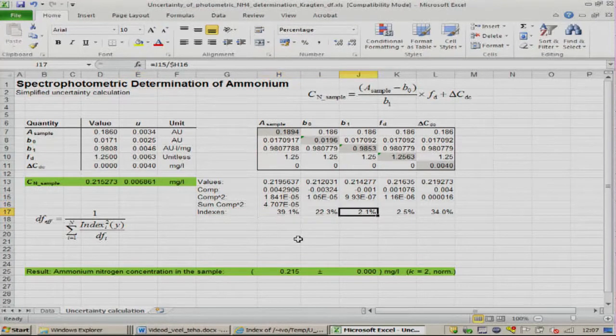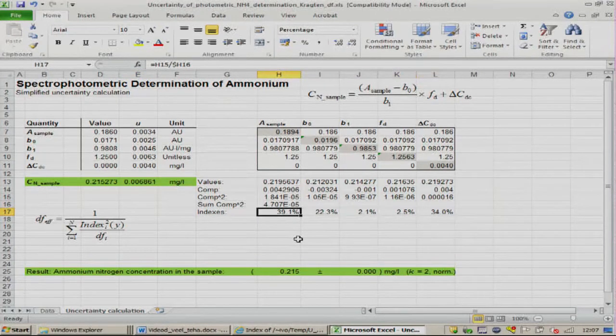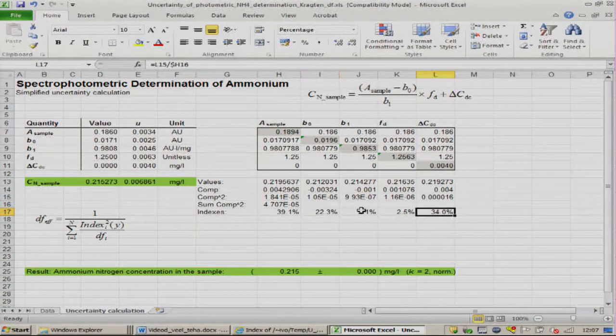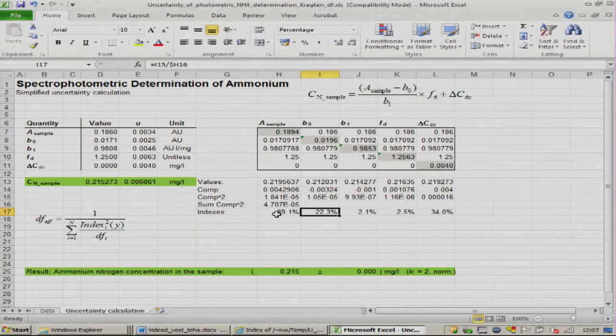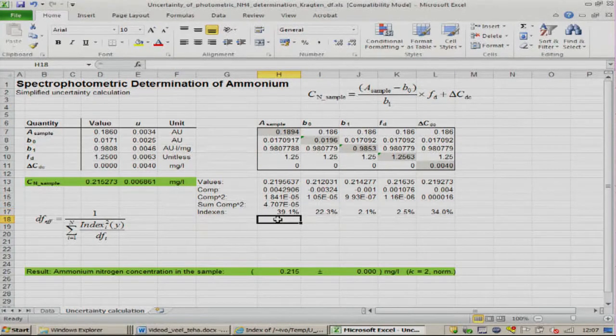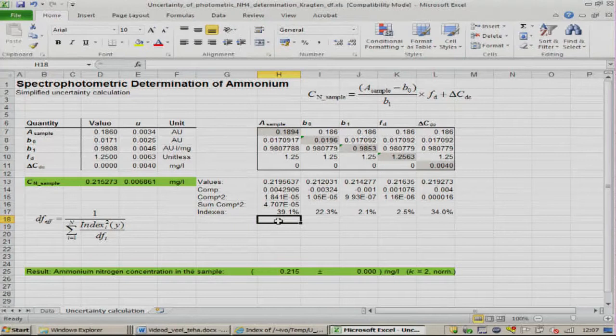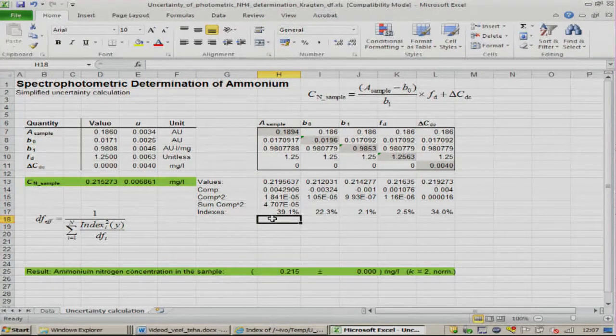We calculated there the uncertainty indexes or uncertainty contributions, and we saw that there are three quantities that dominate the uncertainty, which enabled us to assume that our output quantity is normally distributed. The Welch-Satterthwaite approach actually also enables verifying how well this holds.